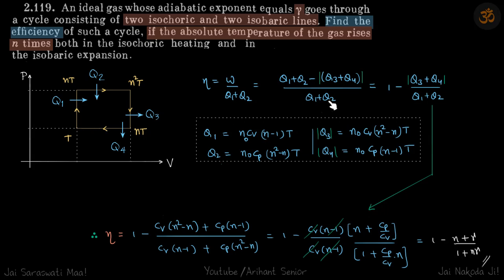For the isochoric processes, we know that heat is n₀cvΔT, and for isobaric, it is n₀cpΔT. So q1 isochoric is n₀cv(n-1)t, and q2 isobaric is n₀cp(n²t - nt).